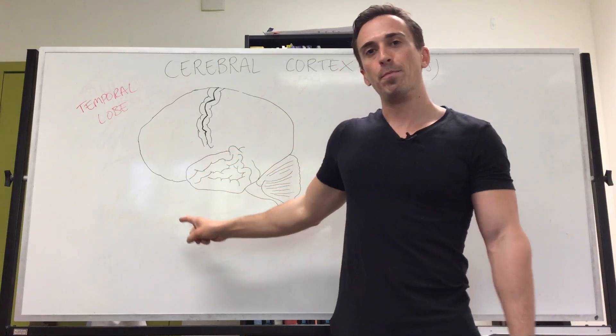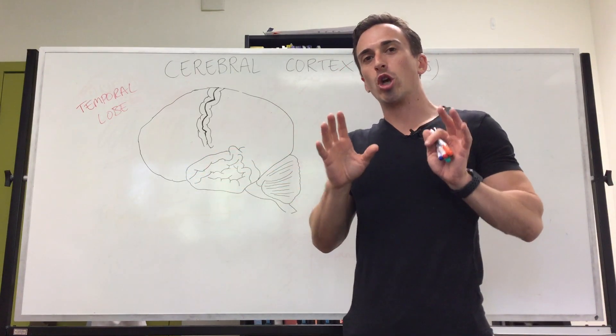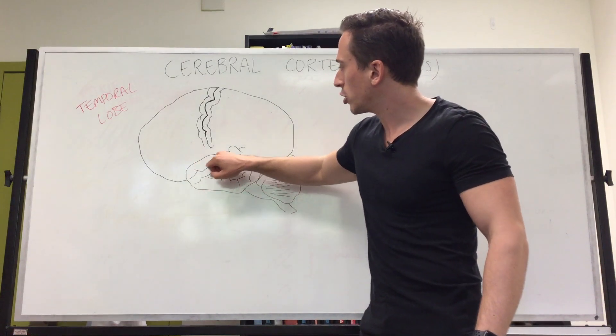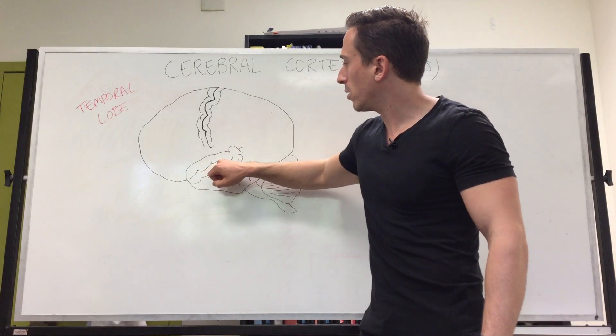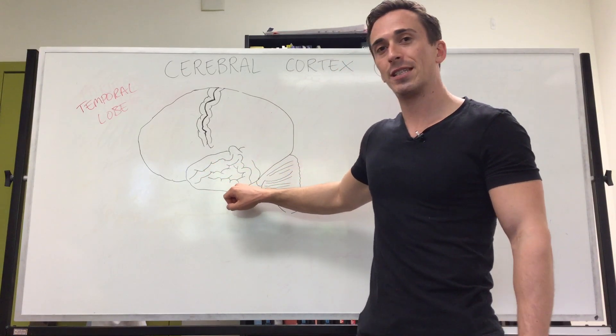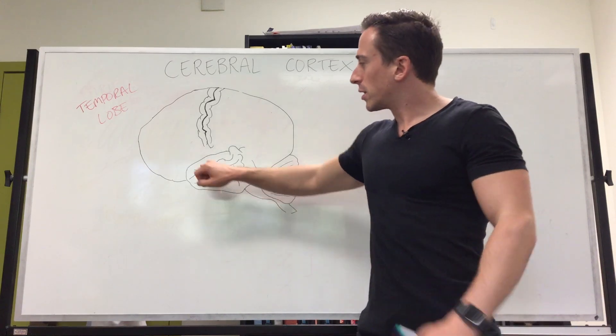This area is the temporal lobe. There are three important gyri you need to be aware of: the superior gyrus, the medial or middle gyrus, and the inferior gyrus. Let's look at the superior gyrus.